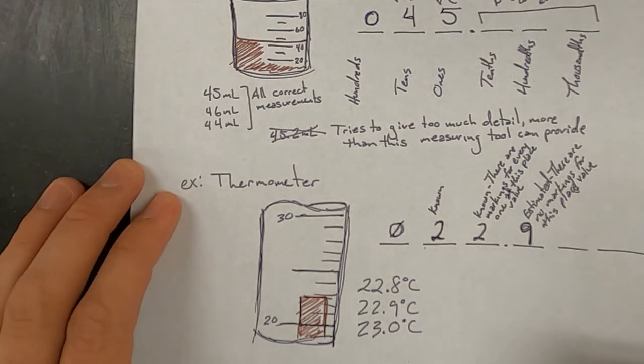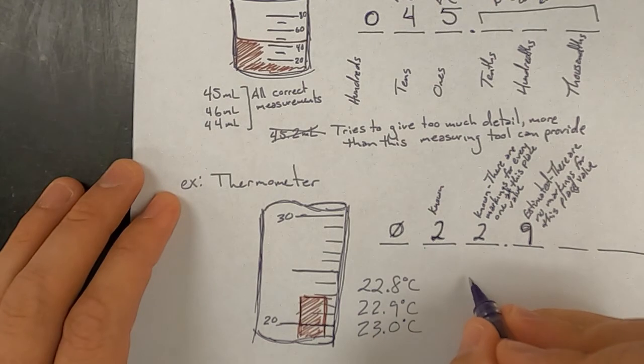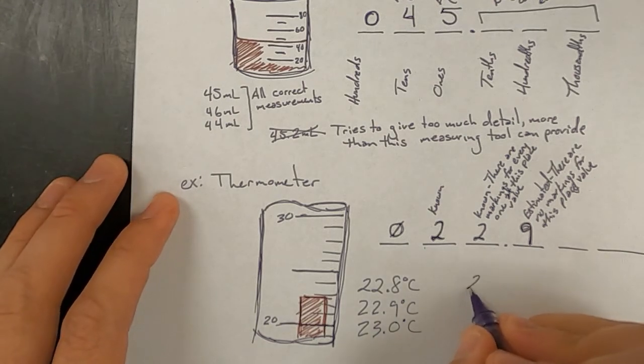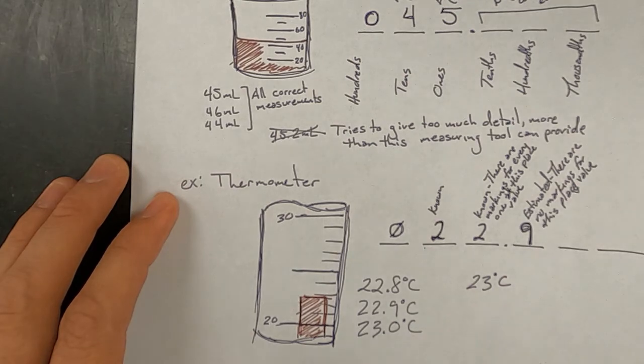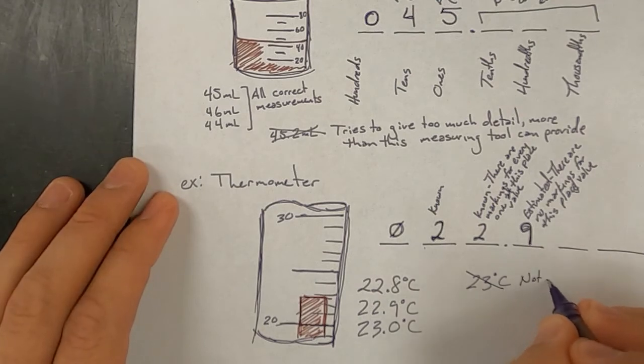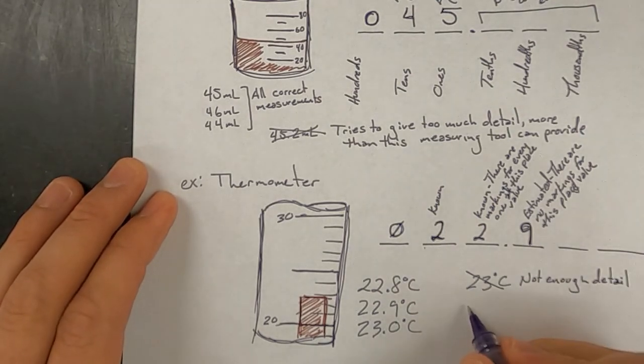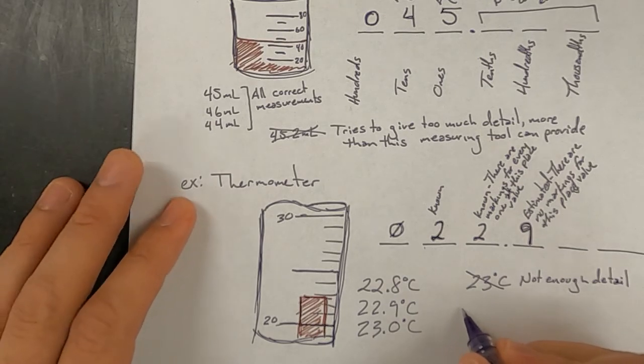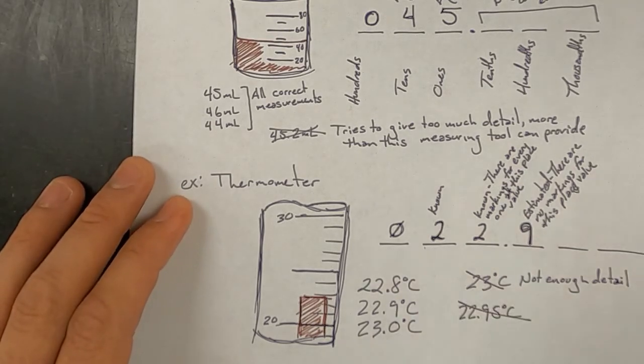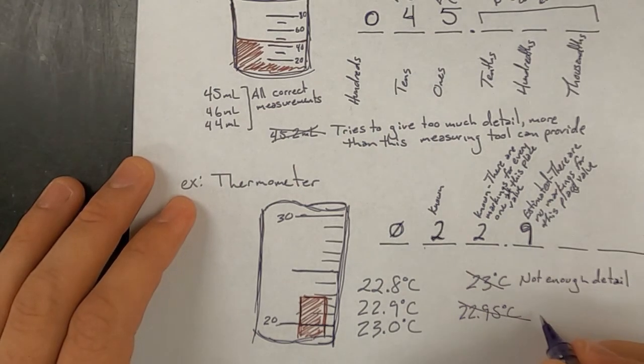What would have been incorrect would be saying something like 23 degrees Celsius, because that does not provide enough detail. This thermometer can provide more detail than this. If someone had tried to say 22.95 degrees Celsius, that is not a valid measurement for this, because that is too much detail than this measuring instrument can provide.